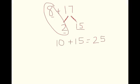So 8 plus 2 is 10, plus 15 equals 25. Now you might have kids that say, oh, I took 2 from the 17 and got 10, and then I added 15. This is a visual representation of that.